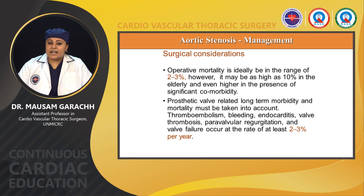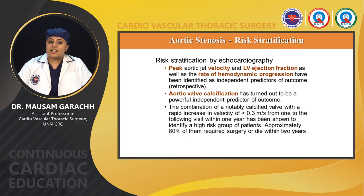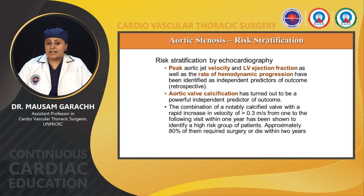Surgical considerations: operative mortality is ideally 2–3%, but may be as high as 10% in elderly patients and higher in the presence of significant comorbidity. Prosthetic valve-related long-term morbidity and mortality — thromboembolism, bleeding, endocarditis, valve thrombosis, paravalvular regurgitation, and valve failure — occur at around 2–3% per year. Risk stratification by echocardiography: peak aortic jet velocity, LV ejection fraction, and rate of hemodynamic progression are independent predictors of outcome. Aortic valve calcification is a powerful independent predictor. The combination of notably calcified valves with rapid velocity increase of more than 0.3 m/s per year identifies a high-risk group; approximately 80% require surgery or will die within 2 years.